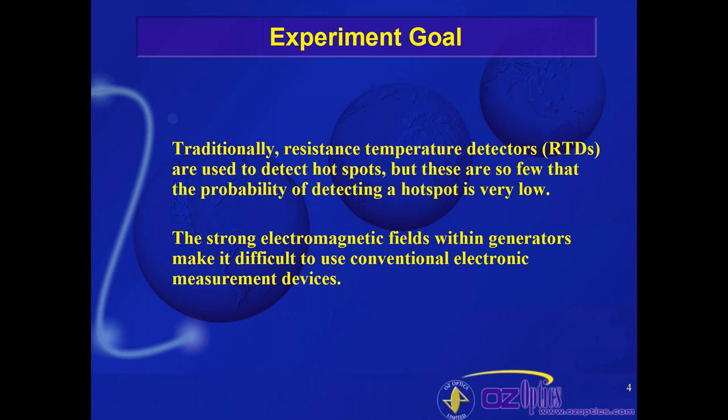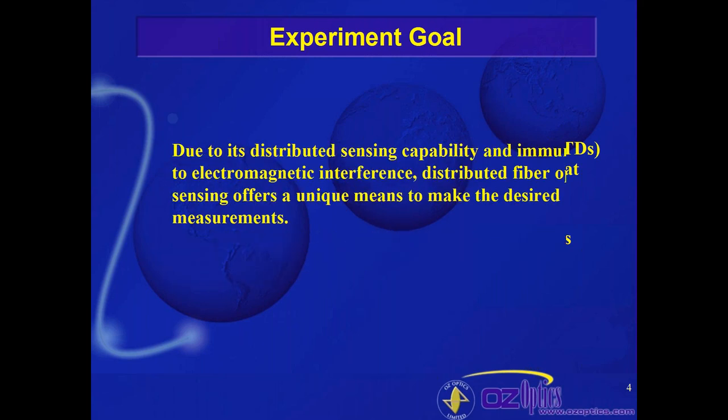The beauty of having distributed fiber optic sensing is that it gives you a distributed temperature profile, so you can see what's happening basically anywhere along the length of the fiber. Another advantage of using fiber optic sensing is that you avoid the problems associated with strong electromagnetic fields. These electromagnetic fields exist within generators and make it difficult to use conventional RTDs or other electronic devices because they introduce a lot of noise and make accurate, repeatable measurements hard. When you use fiber optic sensing, you get around that problem because it is immune to electromagnetic fields. This means fiber optic sensing is nearly an ideal method for making temperature measurements where you want a complete picture of what's going on inside the generator.